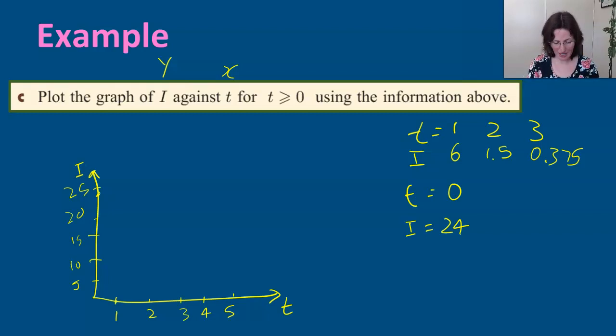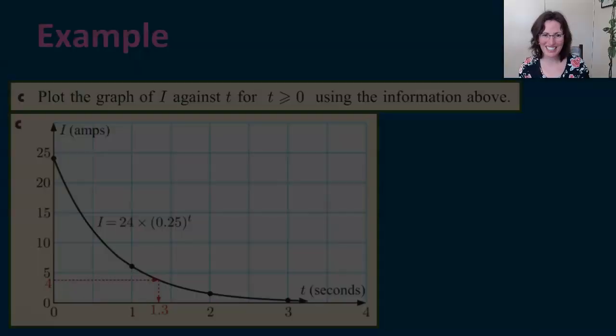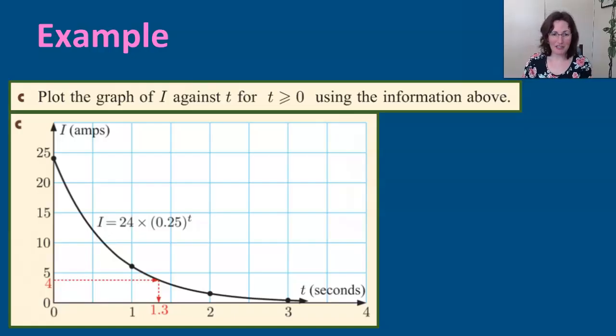When t is 1, I is 6. So it's really dropped down really fast. When t is 2, I is 1.5, really small. So you can imagine what's happening here, making it have a curve as much as possible, certainly not straight lines.